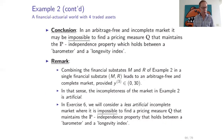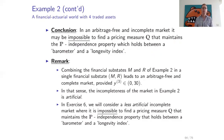The conclusion is that if we work in an arbitrage free and incomplete market as in example two, it may be impossible to find a pricing measure Q that maintains the P-independence property which holds between the barometer and the longevity index. If the price was not equal to 15, there could not be independence under Q. Now there is a remark: in this example the incomplete market has incompleteness that is a little bit artificial.